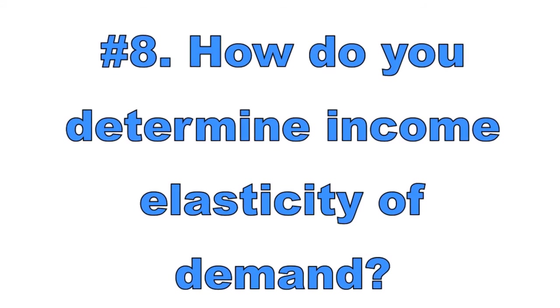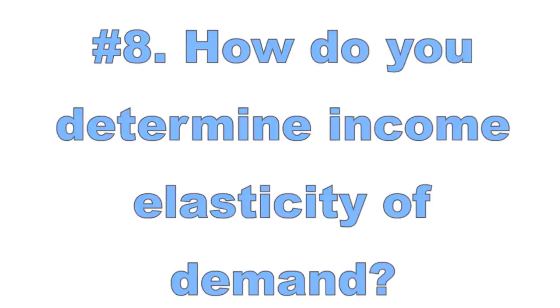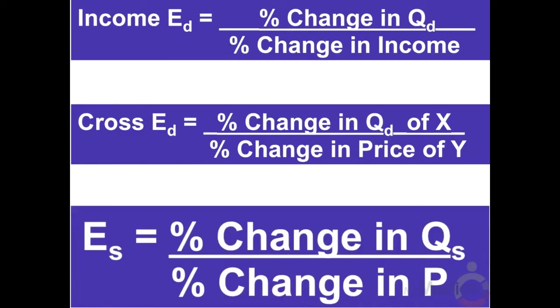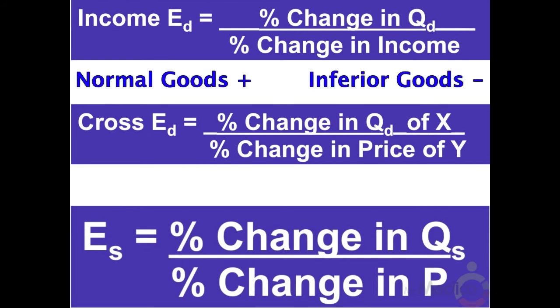Number eight: how do you determine income elasticity of demand? The income elasticity of demand measures how responsive consumers are to changes in income. The formula is percent change in quantity demanded divided by percent change in income. If income elasticity is positive, the good is a normal good — luxury goods have elasticity greater than one and necessities are less than one. If income elasticity is negative, the good is an inferior good.